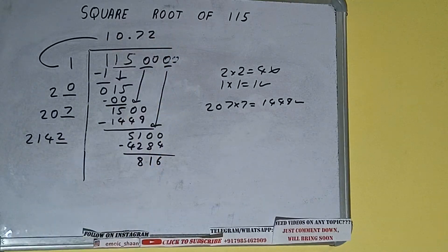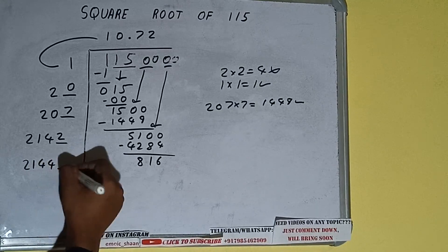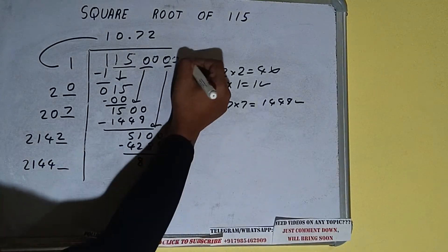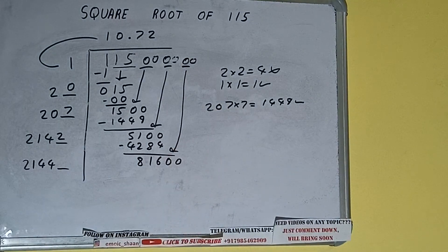Now 2142 into 2 we did. So add both. So 2142 plus 2 will be 2144 and 1 digit extra. And this number we need to make it big. So bring the next pair of zeros down and it will be 81600.